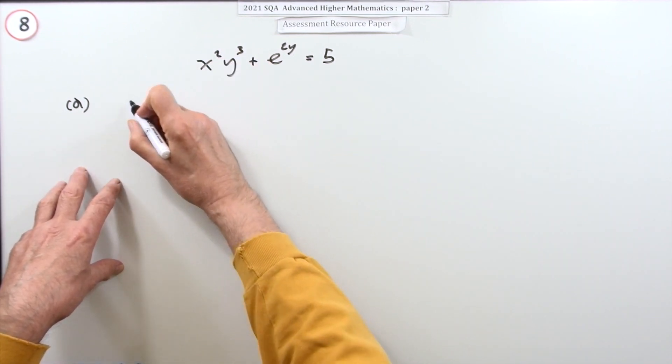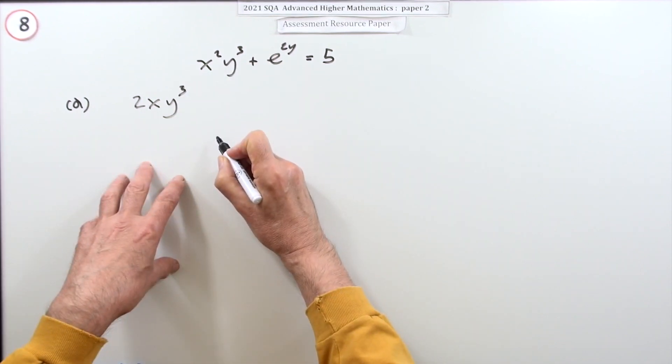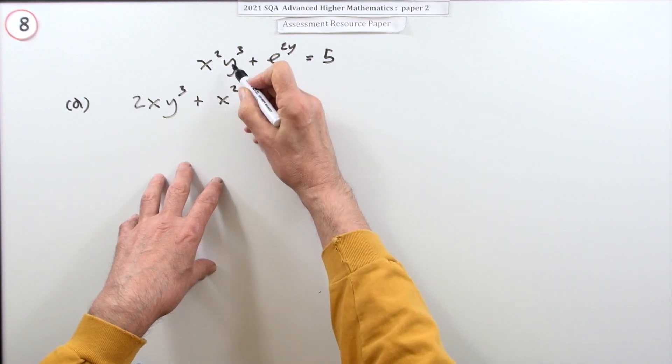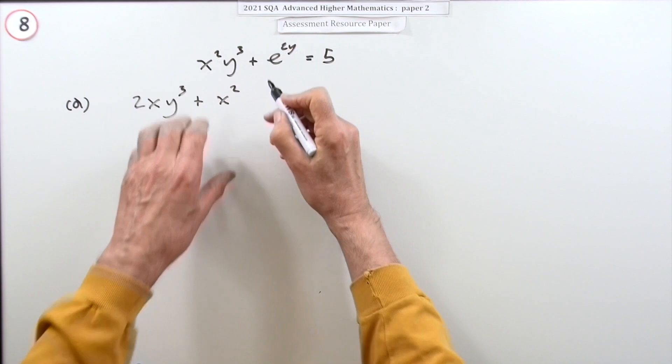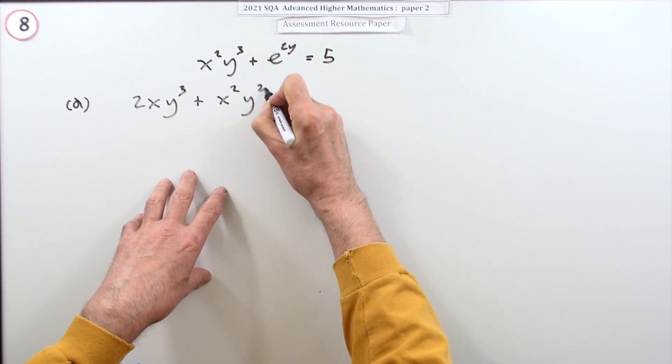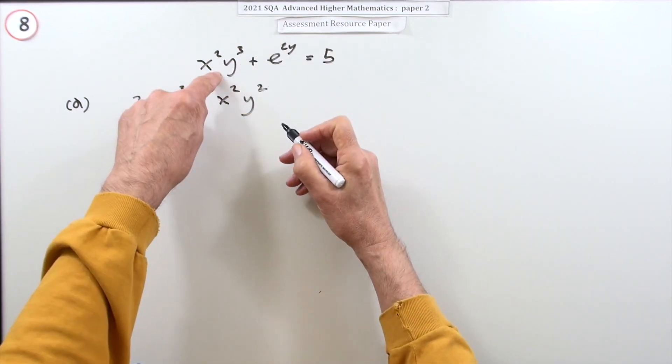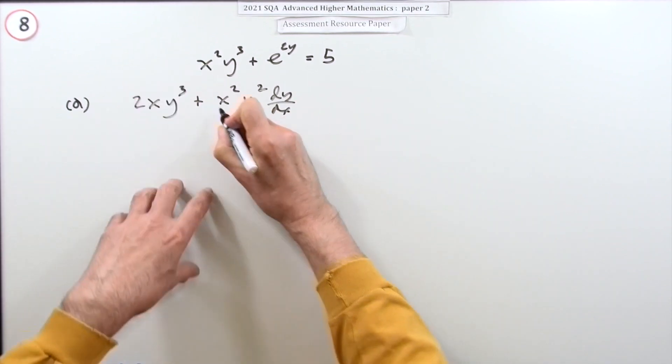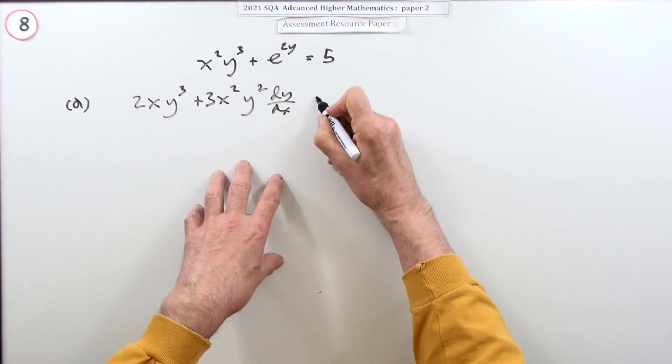Start with x² - that would be 2x, leave the y³ alone. Now leave x² alone. y³: y is a function of x, so the outer function first - cubed would produce 3y² - then multiply by the inner function. Derivative of y with respect to x is dy/dx. I'll put the 3 at the front, so that's the product done.